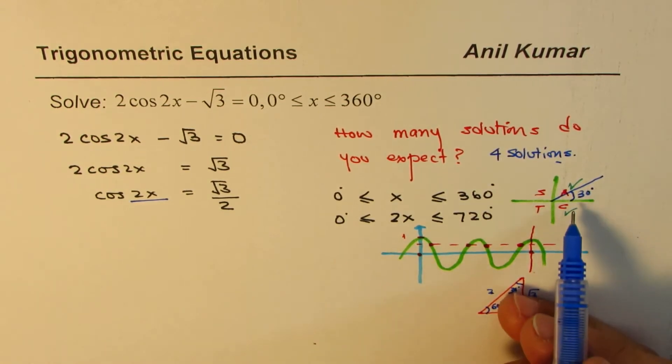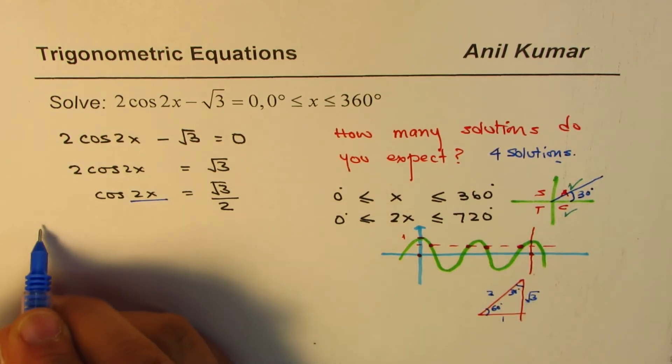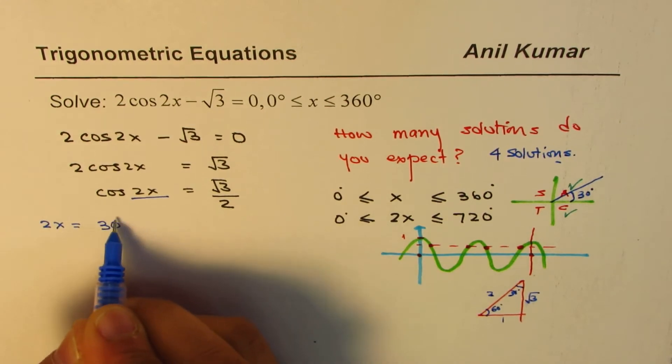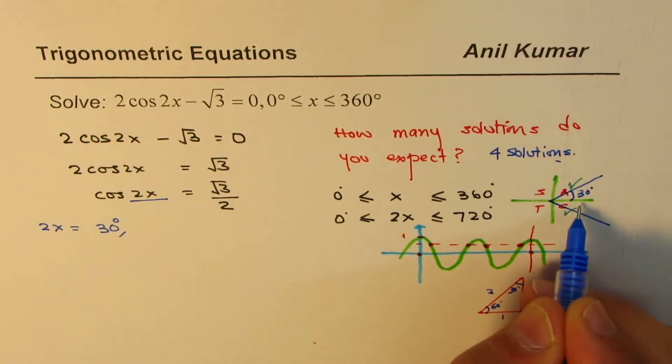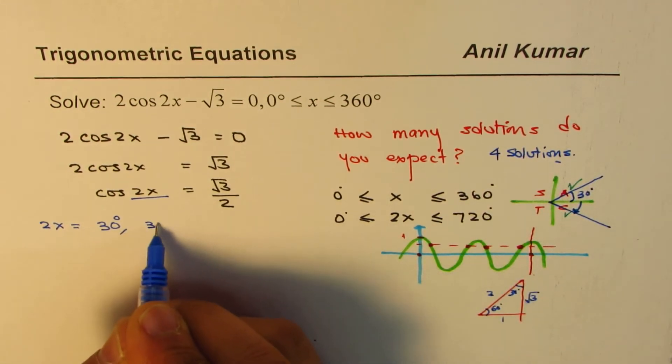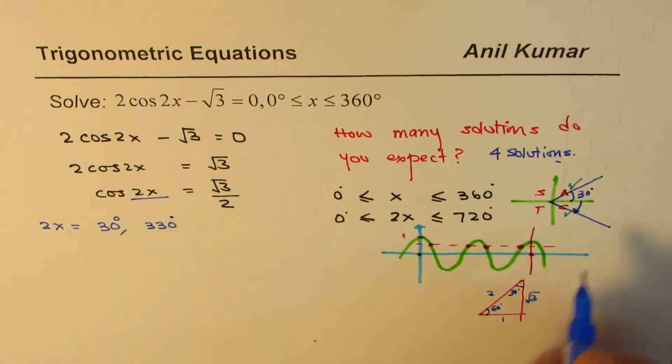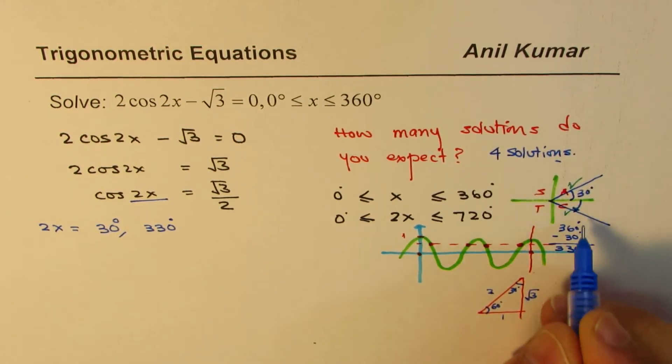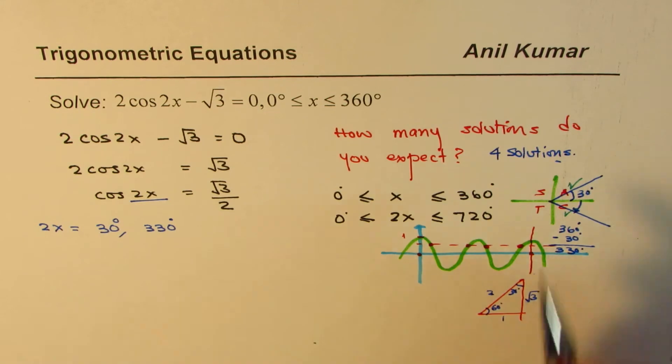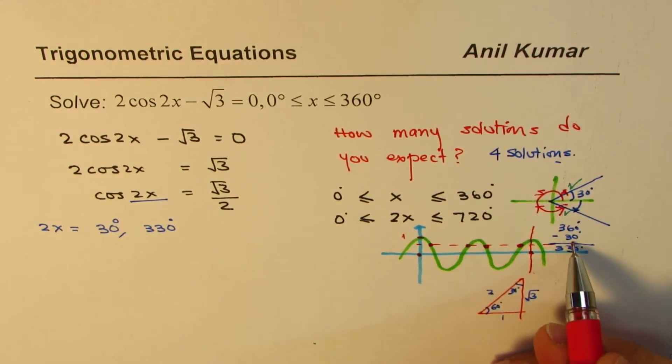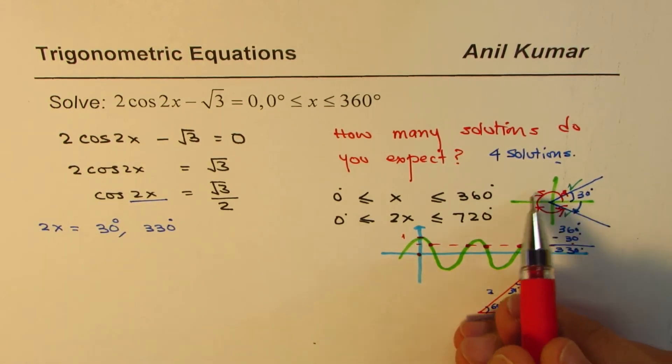So the solution is that 2x is equals to 30 degrees. And the other one will be here. So 360 minus 30 which is 330 degrees. Do you see that these two? So that is to say this one here. So that is 360 minus 30. So these are two solutions in one circle.